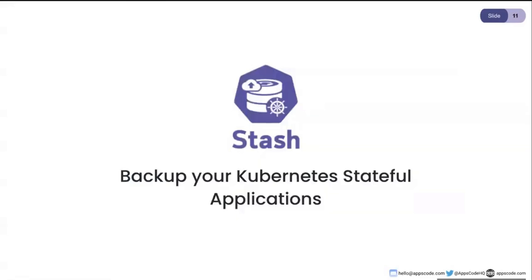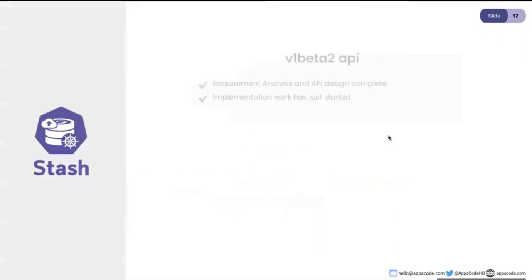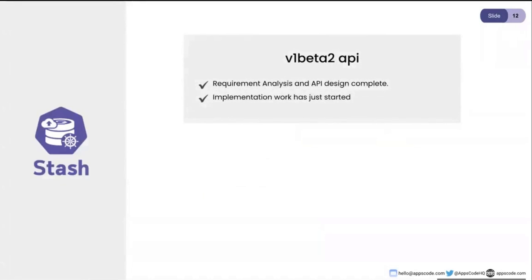Let's talk about Stash. Stash is our database backup, volume backup solution. This release is going to have a number of big improvements. We've been working on this since late 2022, discussing internally the next version of Stash. We're calling it v1 beta 2 API in this slide — though that may change in the final version. The requirement analysis and API design for this new API has been completed in the last month.